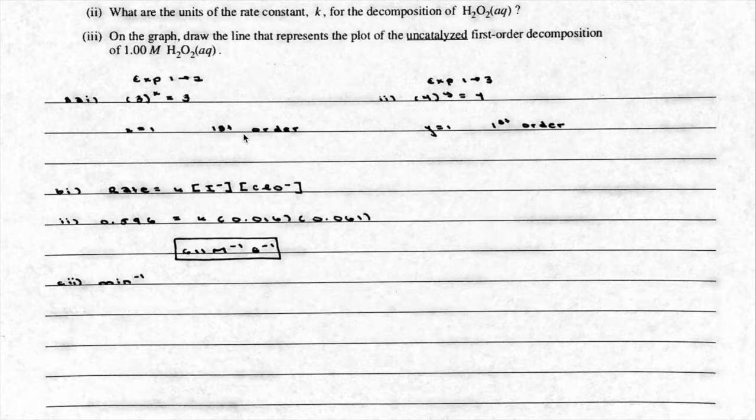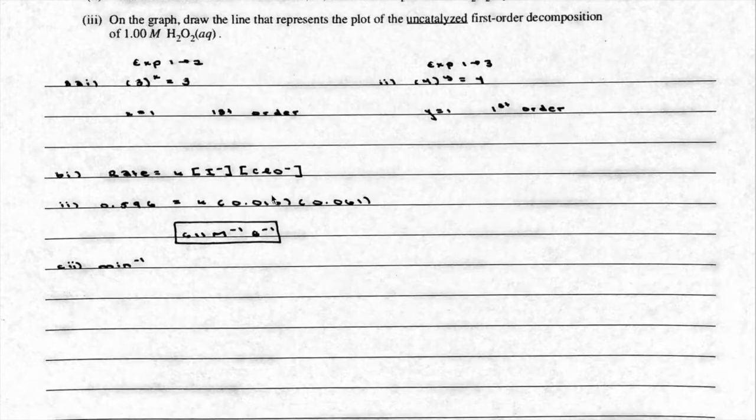For CLL minus, I used experiment one and three, which might be a little bit disheartening for some people. Because as you notice, I simply assumed that the concentration of I minus going from experiment one to experiment three stayed the same, even though it changed a tiny bit. It went from 0.017 to 0.016. But I assumed it stayed the same. Because if you were to take 0.016 and divide it by 0.017, you practically get one. So I assumed it stayed the same. But the concentration of CLL minus quadruples, the rate quadruples, which tells me again, showing this work, that it's going to be first order. So the rate law here is going to be rate equals K times the concentration of I minus times the concentration of CLL minus.